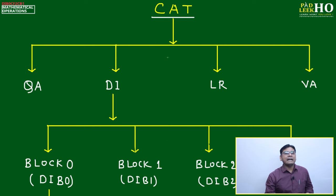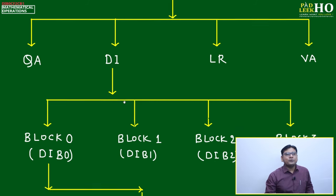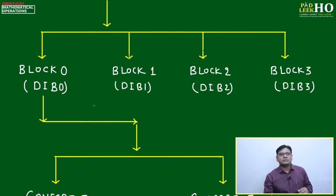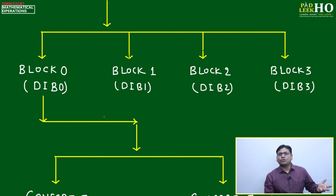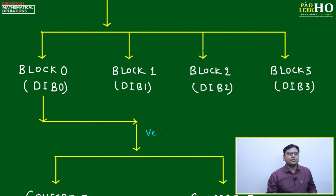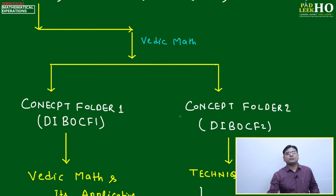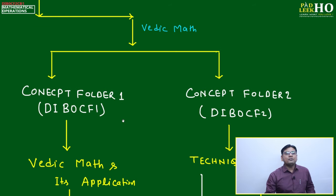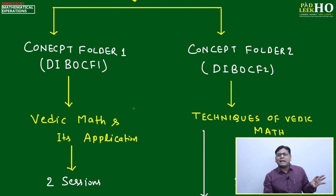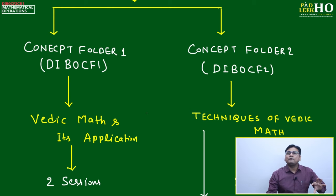CAT preparation is divided into four sections: QA, DI, LR, and VA. We are currently doing DI, which is further divided into four blocks: DIB0, DIB1, DIB2, and DIB3. We are in Block 0, which is mainly related to basic math. In DI Block 0 we will explore all aspects of Vedic math, divided into two concept folders: CF1 covers the general idea about Vedic math and its application for CAT preparation.